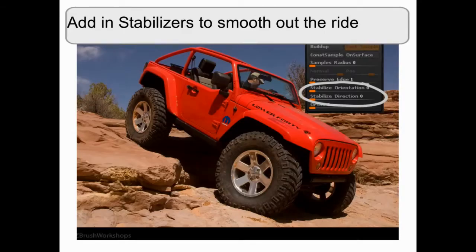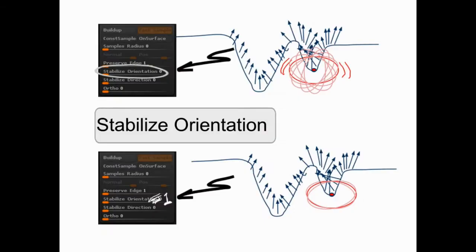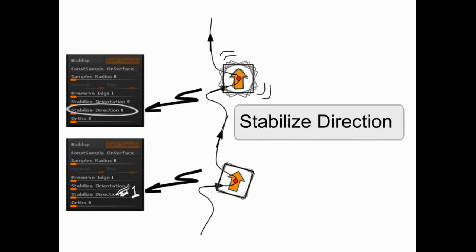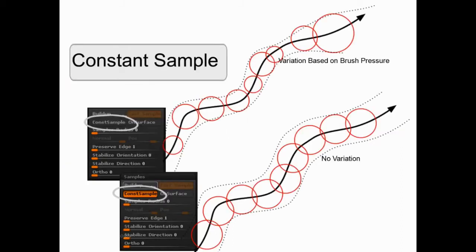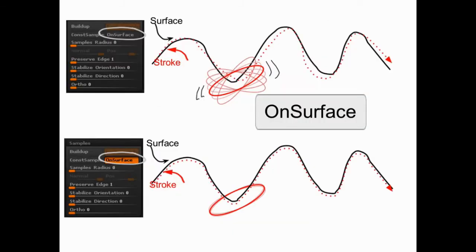You can also add stabilizers to smooth out the ride. Stabilize Orientation is designed to minimize brush artifacting when ZBrush encounters a very complex surface with a lot of conflicting normals. Stabilize Direction is designed to keep your alpha locked to your stroke as much as possible. Constant Sample is another stabilizer designed to keep the sample radius constant along your brush stroke. On Surface works to keep your brush stroke locked to the surface of your model and apply the alpha evenly across it. This can do a lot to smooth out brush artifacting when using the rake brush.